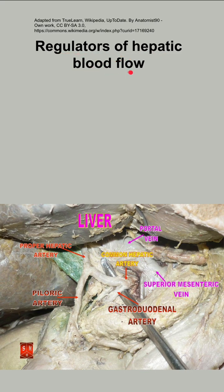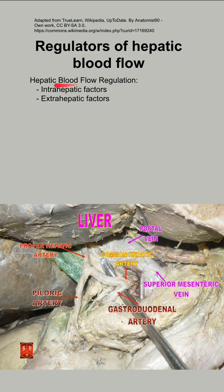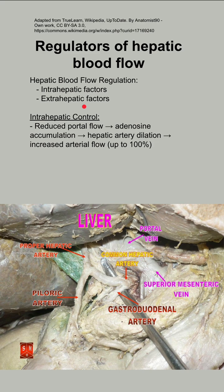These are regulators of hepatic blood flow. There are two big categories for factors that regulate hepatic blood flow: they can be intra-hepatic or extra-hepatic. On the intra-hepatic side, if you have reduced flow through the portal vein, it leads to adenosine accumulation, which leads to hepatic artery dilation, which can increase arterial flow up to 100%.